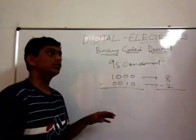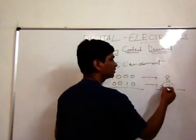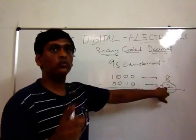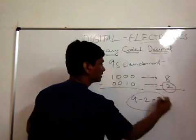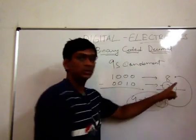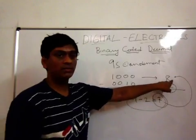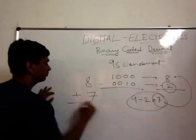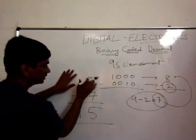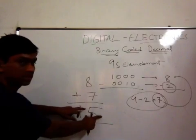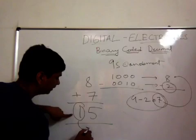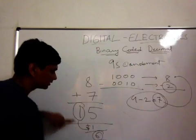The first step is to find the nines complement of the number we are subtracting. Here we are subtracting two, so the nines complement of two is nine minus two, which equals seven. Now take this seven and add it to the number from which you are subtracting — so you have eight plus seven, which equals 15. Since we are working with single digits, the five is the actual digit and the one is the carry.